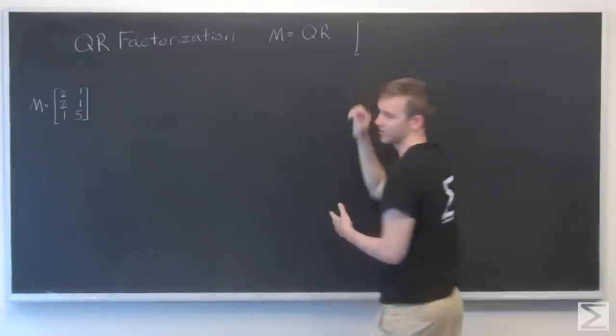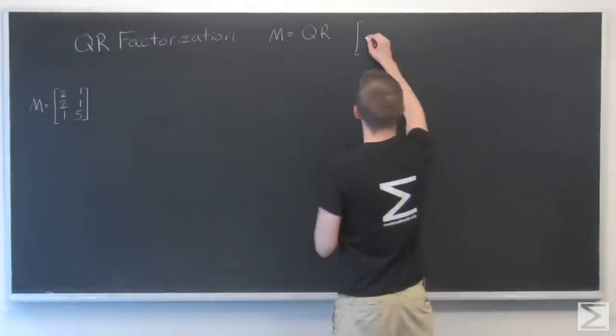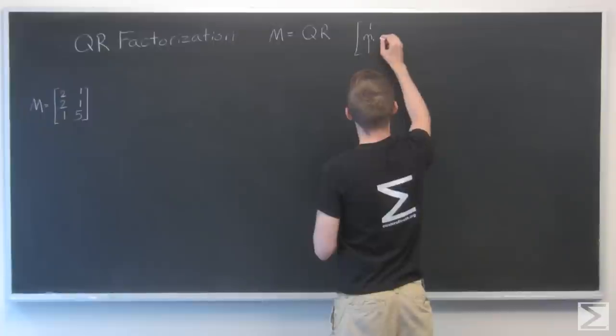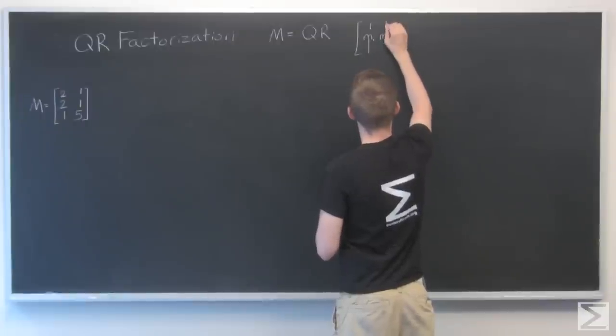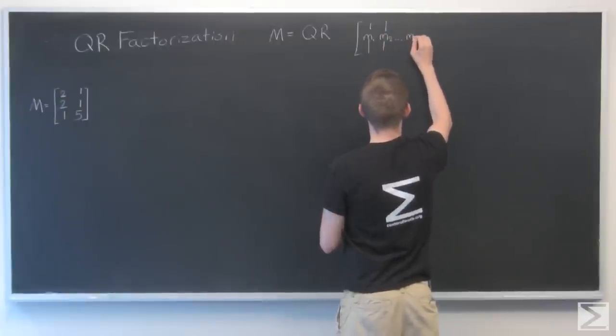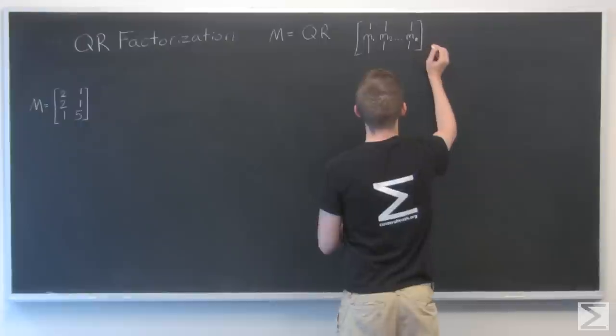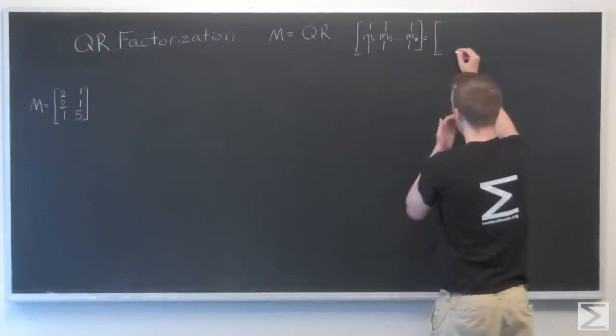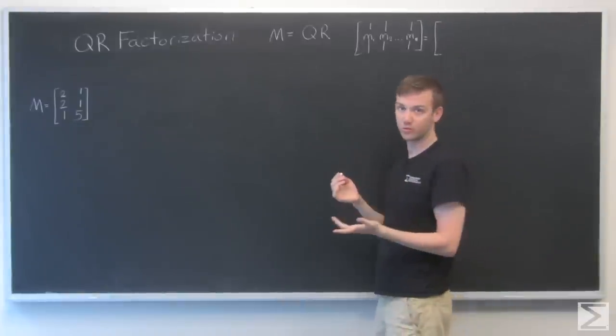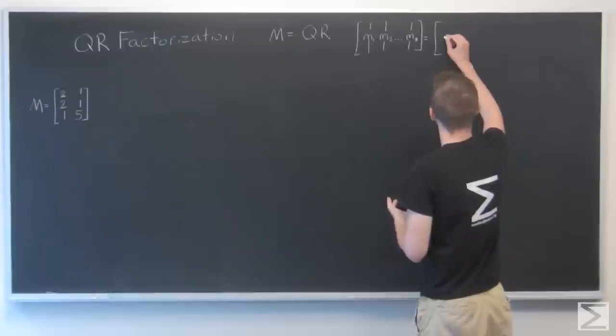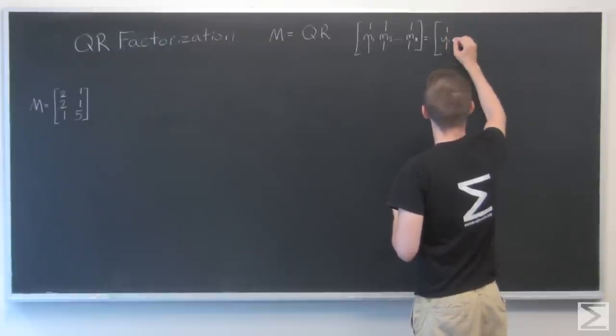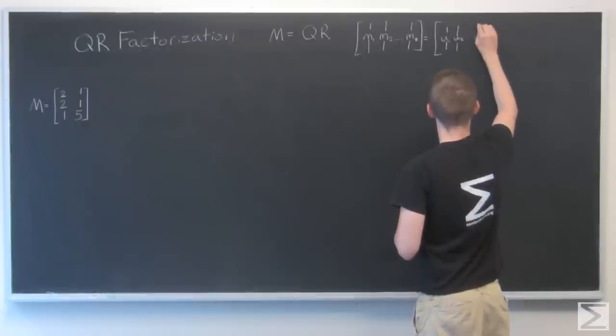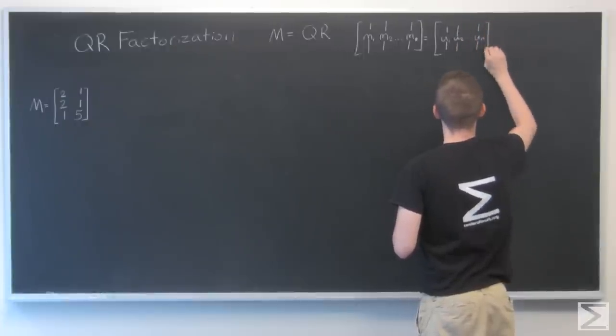So I'm going to write out what that looks like. Here's M, because it's matrix M, I'm going to call the column vectors little m1, little m2, up to mn. It's going to equal our orthonormal basis of vectors, so U1, U2, all the way up to Un, for however many columns that we want.